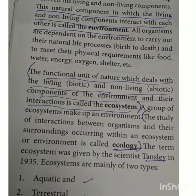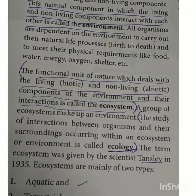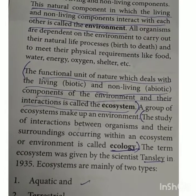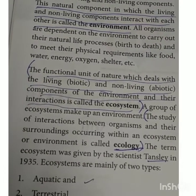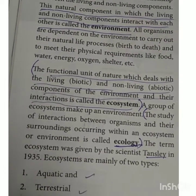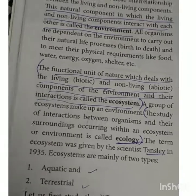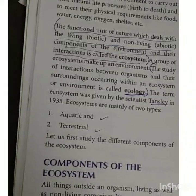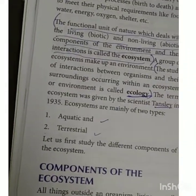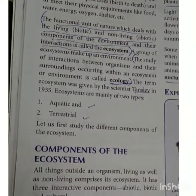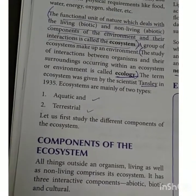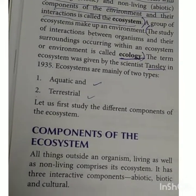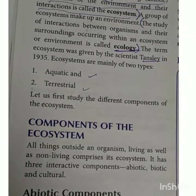We have to remember this name: Tansley. In your syllabus, two types of ecosystem are given: aquatic and terrestrial. Aquatic means we will learn about aquatic life — how many animals and plants live together in the aquatic ecosystem. Now, these are the components of the ecosystem.